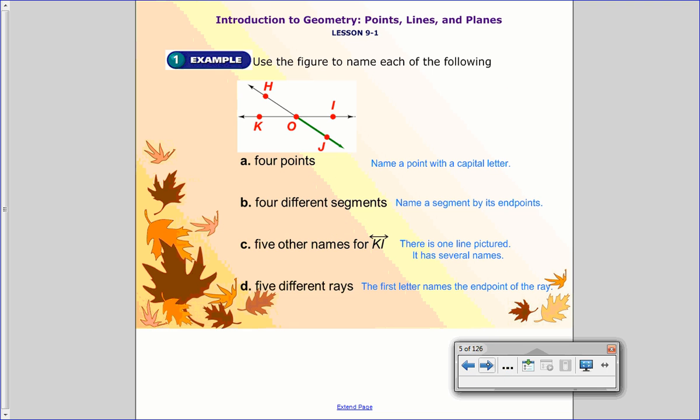So now we're going to go ahead and try to identify some with this figure here. And A says, list four points. Well, points, again, are just those ones that are in red. So, for example, there's point K, point H, O, I, and you could even list the fifth one of J. And how you do this is when you list a point, I have it written in blue over here, you label it with a capital letter.